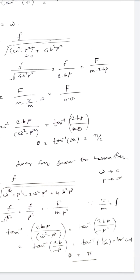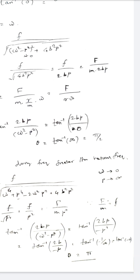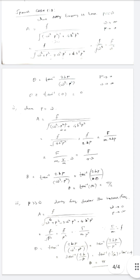For Case 3, p greater than ω: ω² − p² is negative. The amplitude A = f / √[(ω² − p²)² + 4b²p²] still holds but is smaller. For the phase angle, tan θ = 2bp / (ω² − p²) = 2b / (−p) which gives a negative value, so θ is between π/2 and π. These are the three special cases.